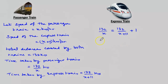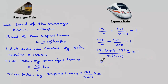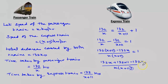Let us do the calculations. Transposing 132 divided by x plus 11 to the left-hand side, the LCM is x into x plus 11. So we get: 132 into x plus 11 minus 132 into x, whole divided by x into x plus 11, equals 1.